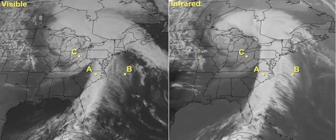It's critical to realize that infrared imagery is different. It's showing us temperature, either of cloud tops or the Earth's surface. Note that even though no temperature scale is shown on the infrared image, brighter shades of gray and white correspond to lower temperatures, as is typically the case.